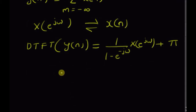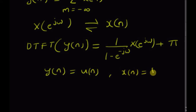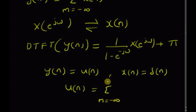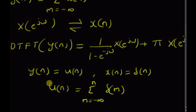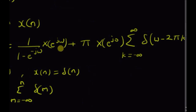Clearly, for y(n) = u(n), the corresponding x(n) is equal to δ(n), because u(n) can be written as the sum from m = -∞ to n of δ(m). Since δ(m) is 0 for all m except m = 0, u(n) can be written as the summation of δ(m)'s. Therefore y(n) corresponds to the summation of x(m)'s and we can use the accumulation property formula.